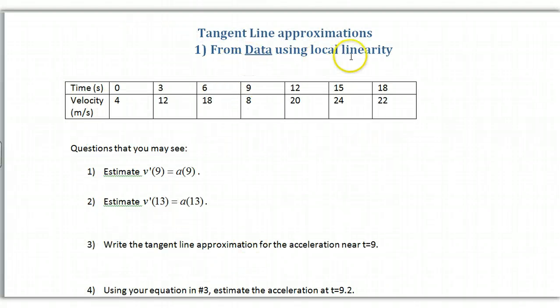Tangent line approximations using data. Here's data from a previous video with time and velocity. You may be given many different things to analyze. They might ask you to estimate the derivative. In this case, it's the velocity, so if I want to estimate v prime of 9, I'm looking for the tangent slope of v at 9. The first thing you should do is use the point of interest.